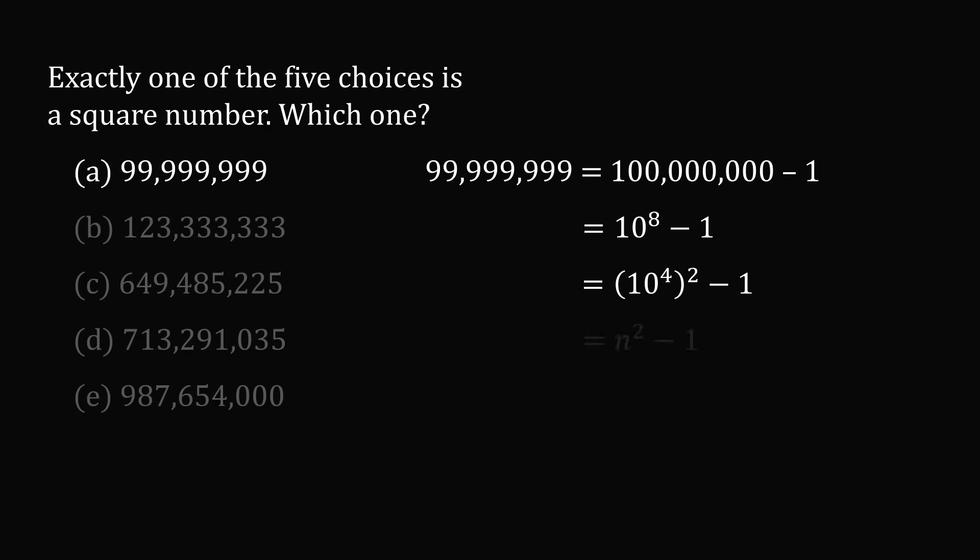So option A will be 1 less than a perfect square. It'll be n squared minus 1. So since we are 1 less than a perfect square for a very large number, this option itself will not be a perfect square. We can eliminate answer choice A.